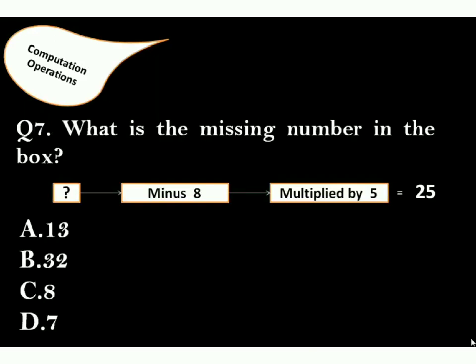Question 7: What is the missing number in the box? Answer is option A. 13 minus 8 equals 5 and 5 multiplied by 5 equals 25.